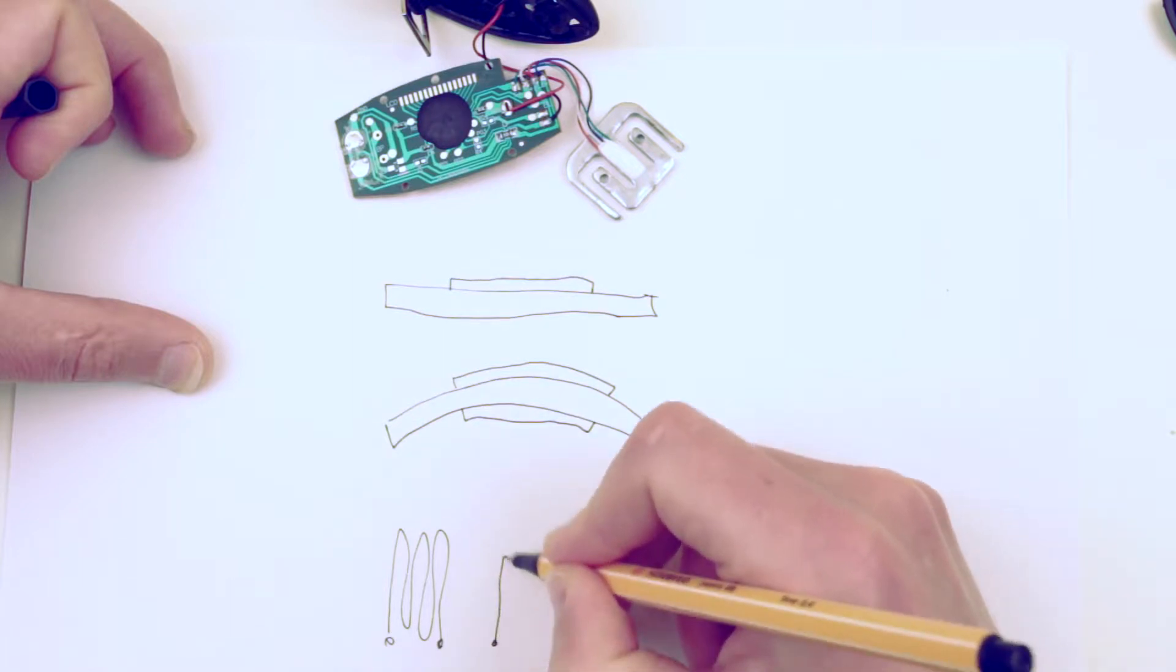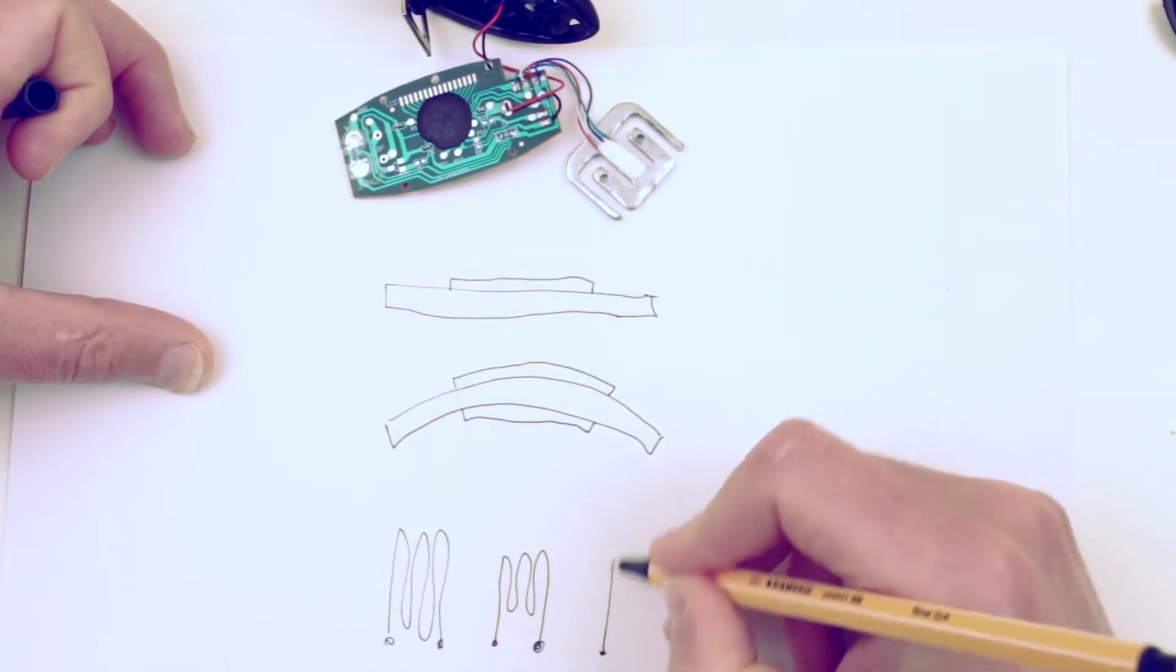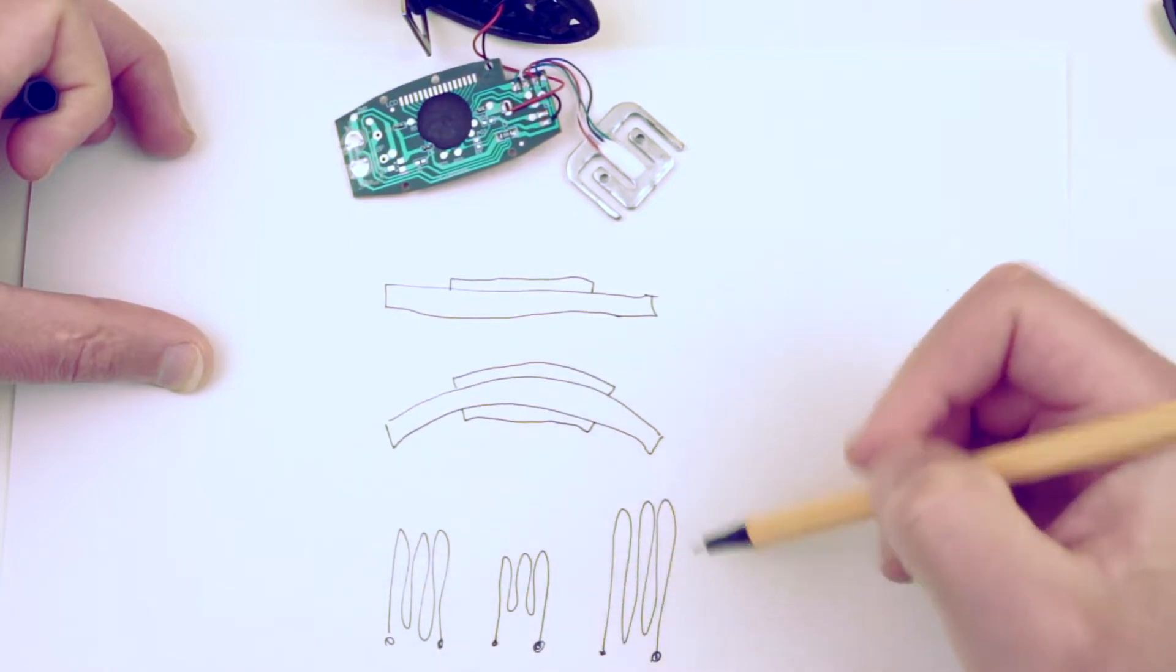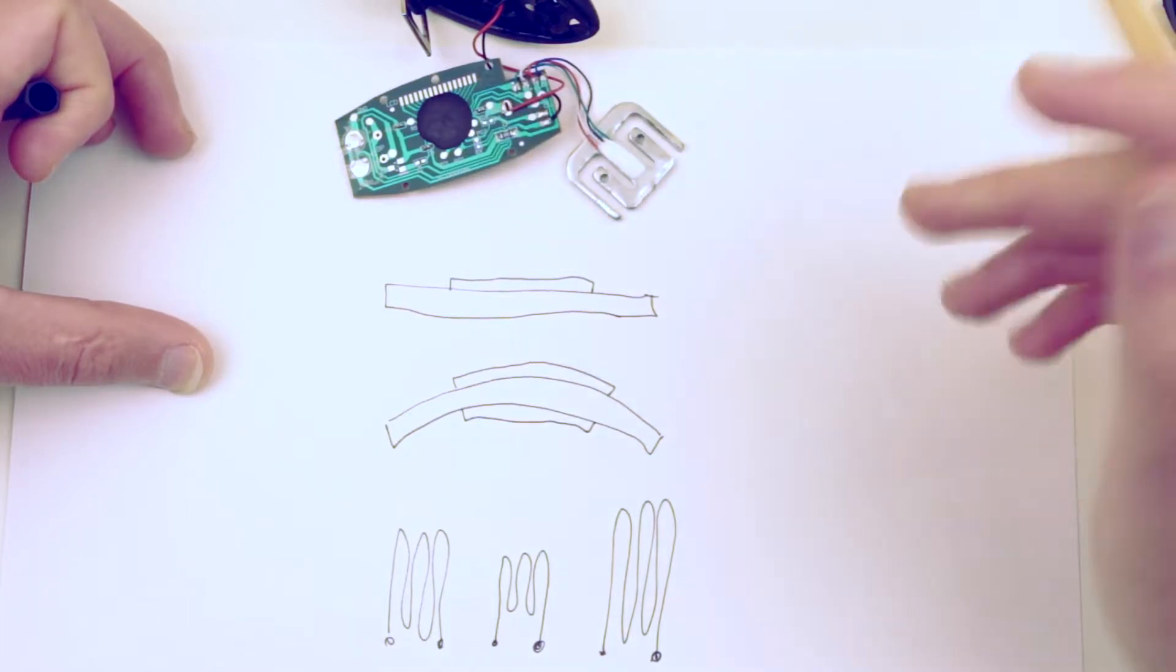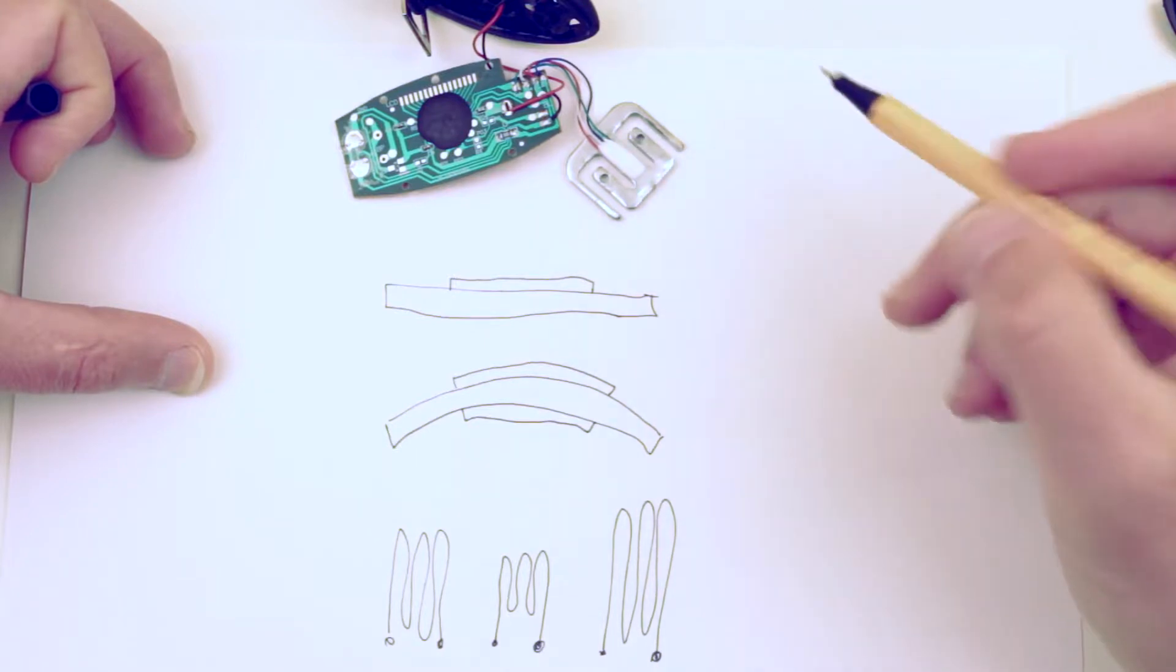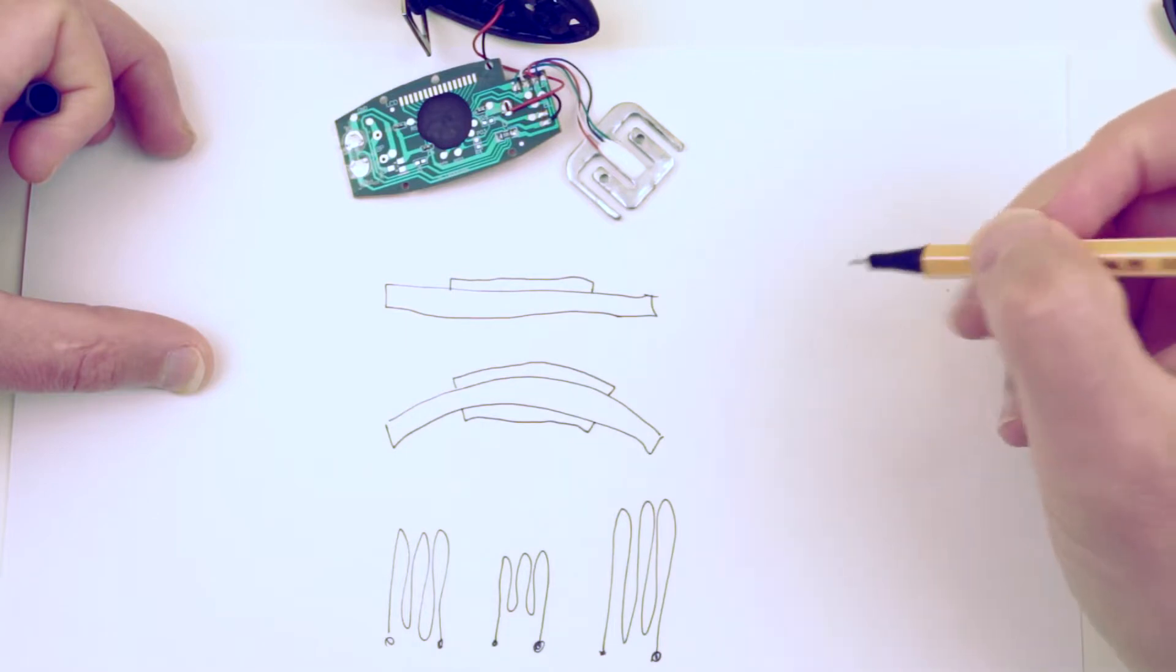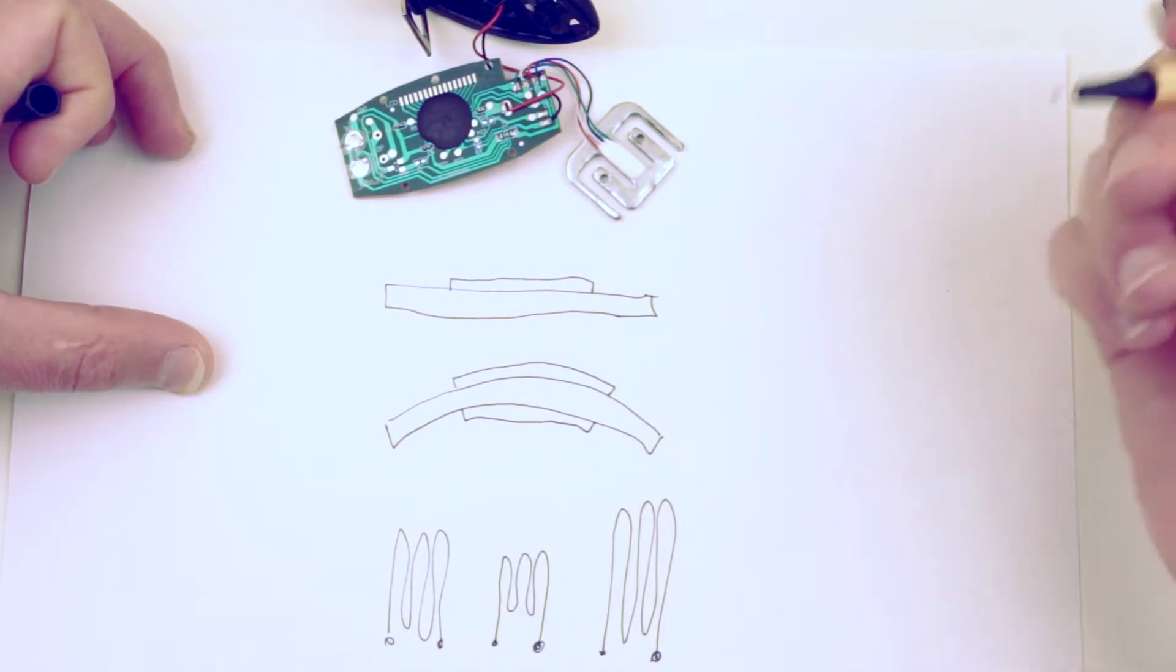Imagine this strain gauge over here. It would become a bit shorter, or over here would be a bit longer, and these changes in resistances would be measured by this device. But in this particular case we have four connectors over here. What does it mean?